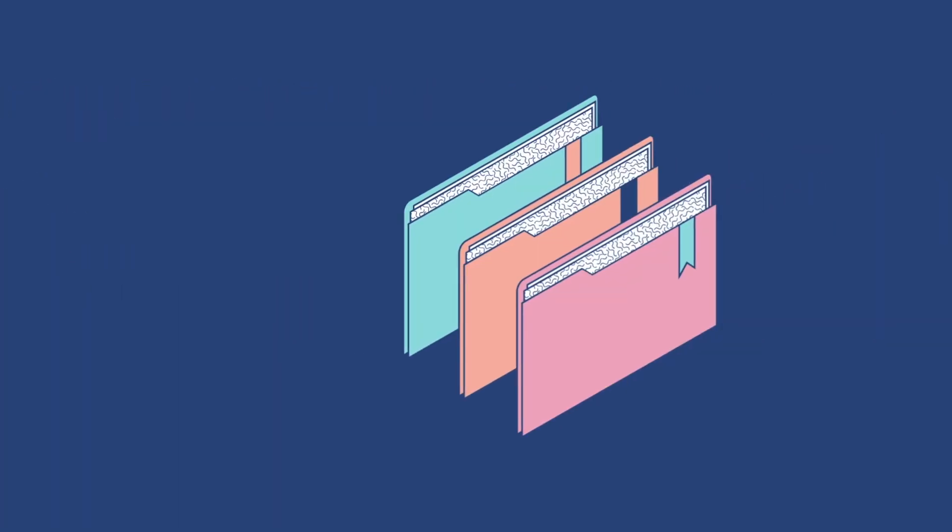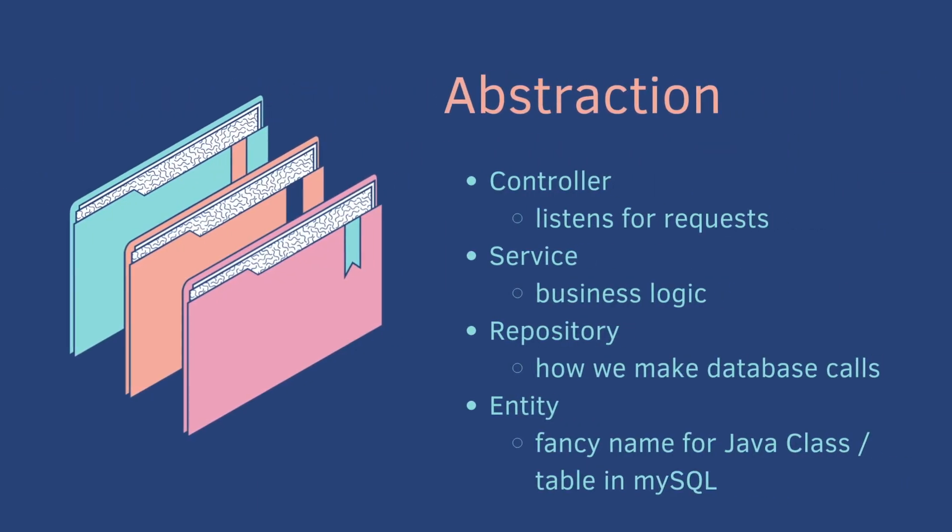Here is our abstraction so far. We have a controller, which listens for requests, and the service layer, where the business logic lives. Today we are adding the repository, which is how we make database calls, and an entity — a fancy name for a Java class or a table in MySQL.